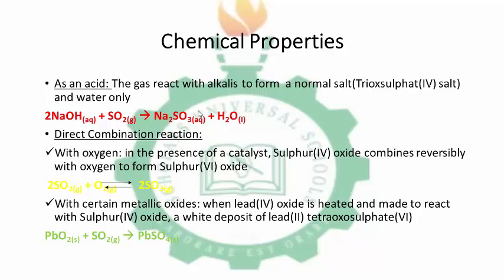To favor the forward reaction, we have certain conditions, and also conditions to favor the backward reaction. Please take note: the reaction is an exothermic reaction. Increase in pressure favors the forward reaction; decrease in temperature also favors the forward reaction. Increase in temperature favors the backward reaction, and decrease in pressure favors the backward reaction. With certain metallic oxides, for example lead(IV) oxide, SO2 reacts to form a sulfate salt. PbO2 reacts with SO2 to produce PbSO4, which is lead(II) sulfate.